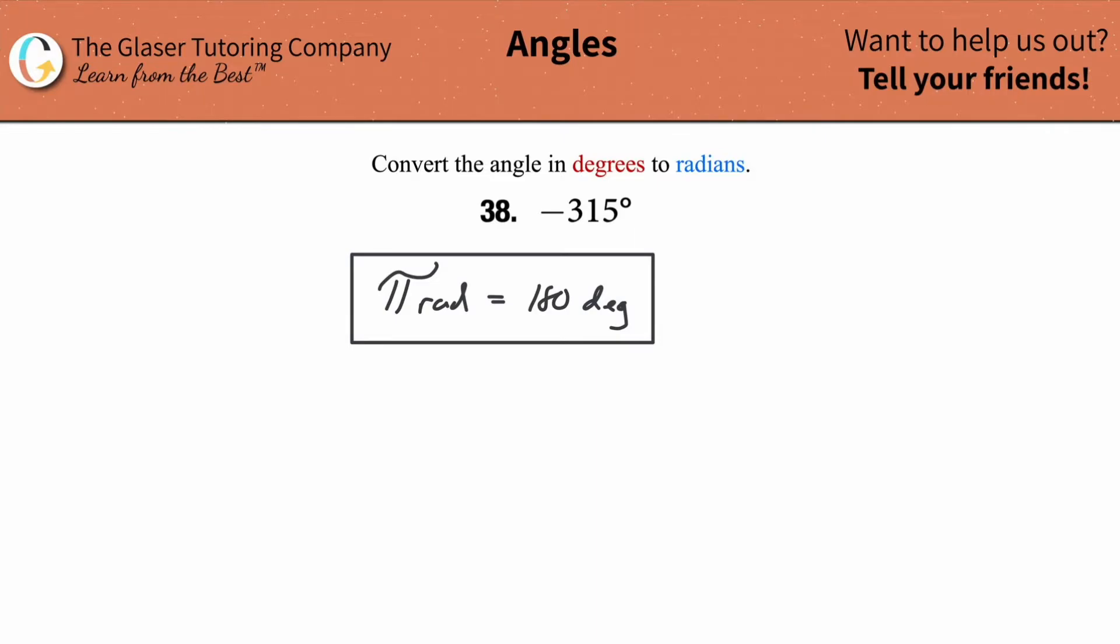Then what we're going to do after we know a relationship, we're going to take our given value of negative 315 degrees. I'm going to write out the word degree instead of putting the symbol. Then what I need to do is I need to take this known value that I'm converting, meaning the 315 degrees, and then I have to multiply it by a conversion fraction. Now, this conversion fraction will have two things, something in the denominator and something in the numerator.